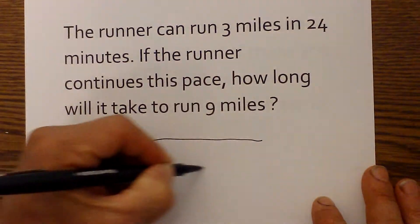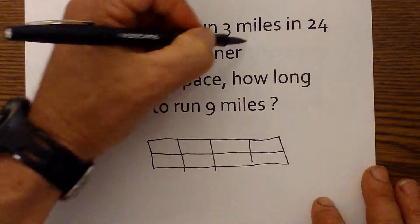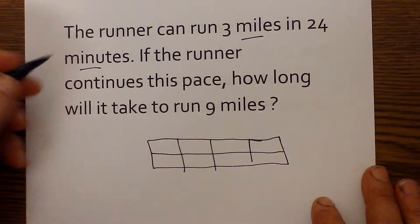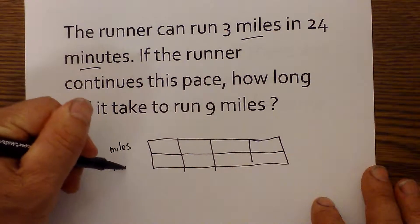Again, I'm going to draw a box. I'm going to label what information is given. I'm given miles and minutes. So this will be miles and this will be minutes.